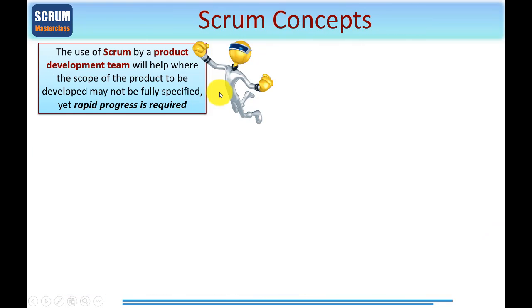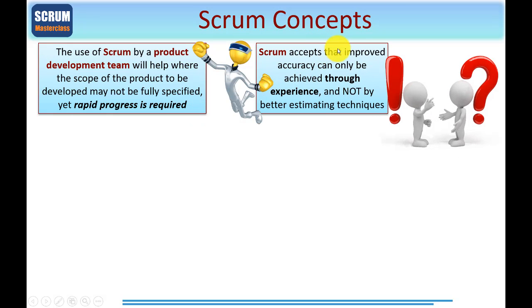Keeping a fairly high-level view, let's go over the basic Scrum concepts. The use of Scrum by a product development team will help where the scope of the product — meaning what's included and what isn't — may not be fully specified. Yet despite that, rapid progress is required. If the scope is not fully developed, then neither will be the requirements and user stories, which Scrum uses to represent requirements. It's quite normal and natural that the scope and requirements will evolve over the coming Sprints. Scrum accepts that improved accuracy can only be achieved through experience, and not by better estimating techniques. There's no magic bullet — you can only base estimating on experience.